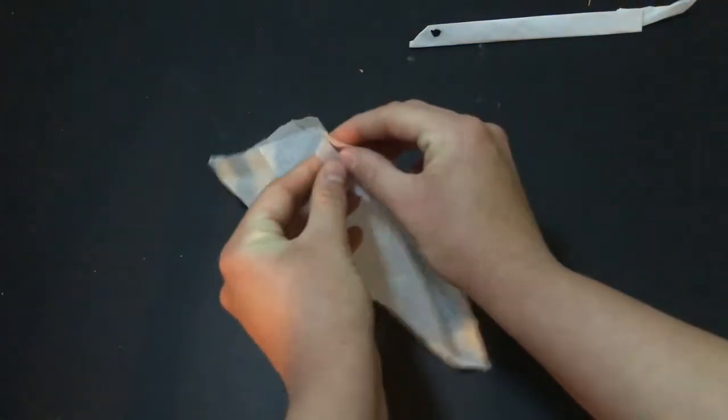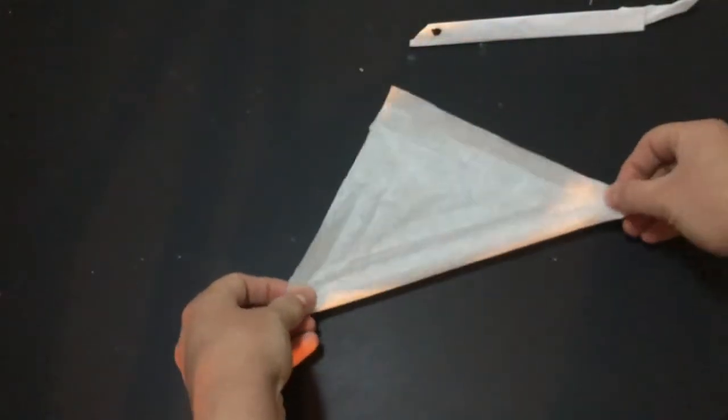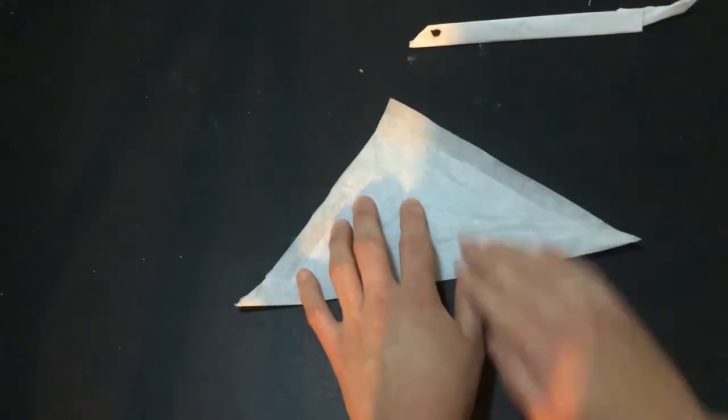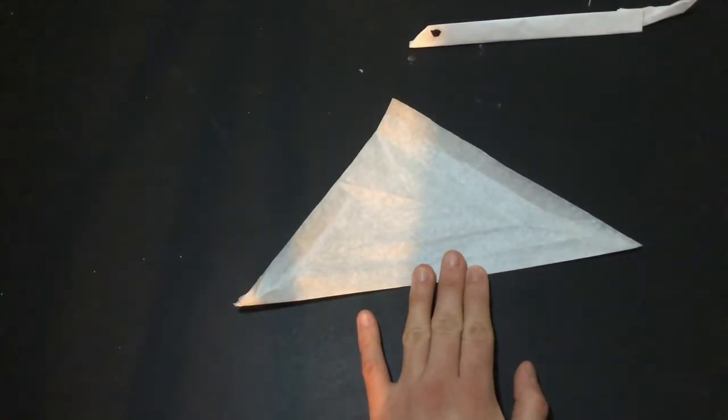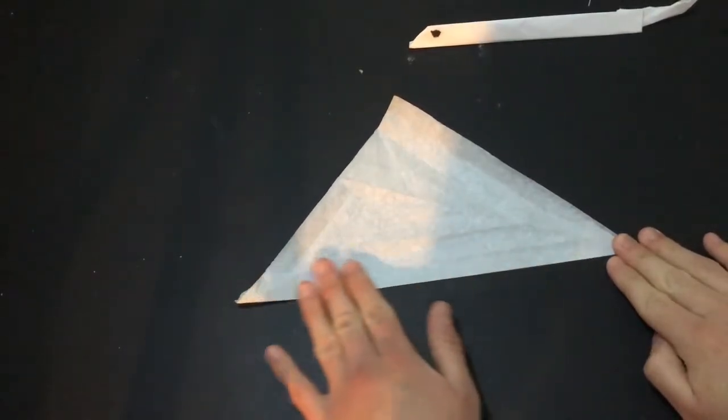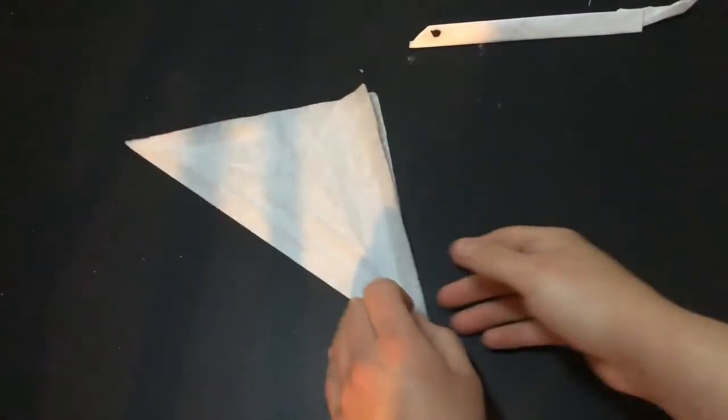So the first thing you're gonna do is take your tissue paper. I cut out an 8 by 8 inch square, and you're gonna fold it in half diagonally so that the two corners touch and we've just turned our square or diamond into a triangle. Make sure that line is nice and creased.